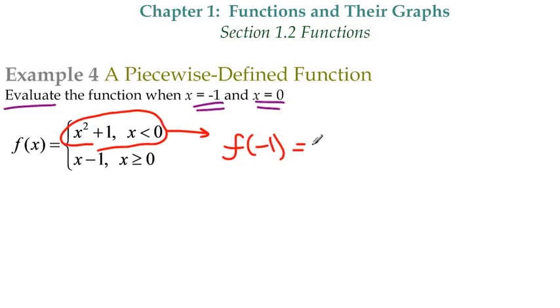So we're going to use f of negative one is negative one squared plus one. Notice what I just did. I just replaced all the x's right now with negative one. And then negative one squared is one plus one is two. So our answer then is f of negative one is two. That's all it is right there.